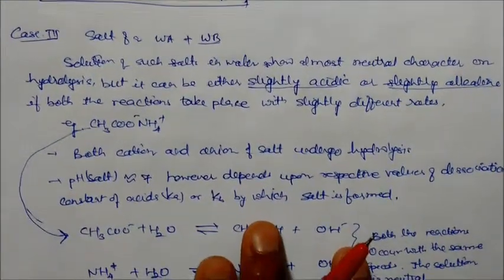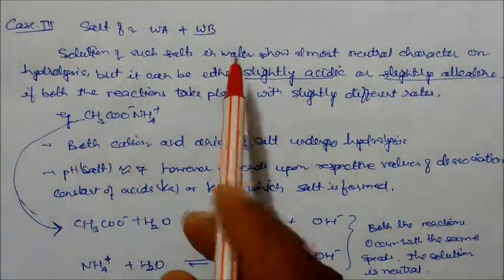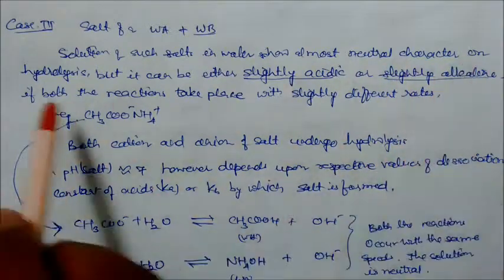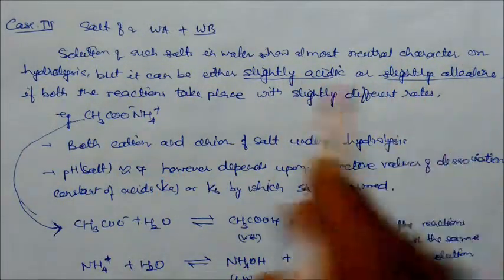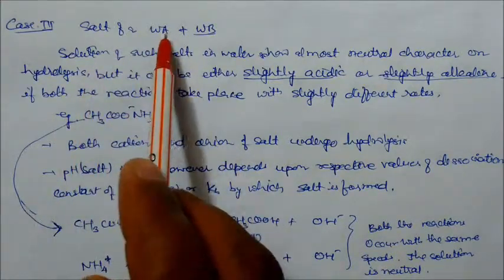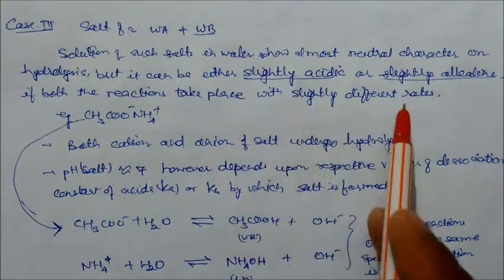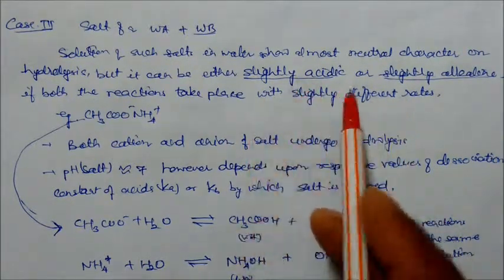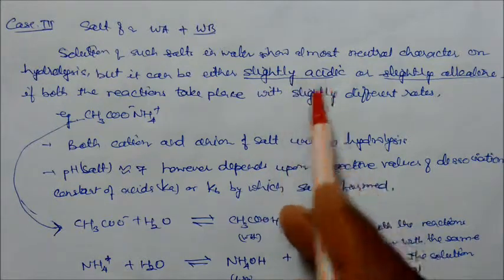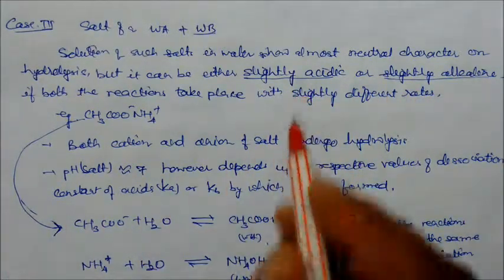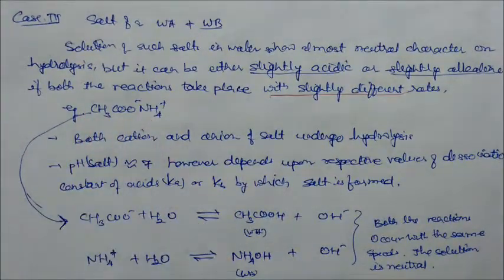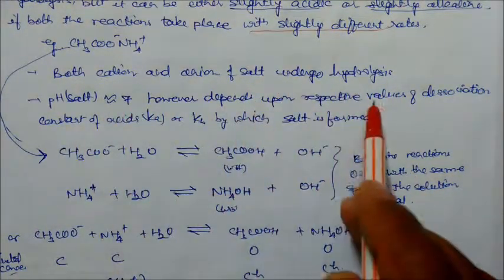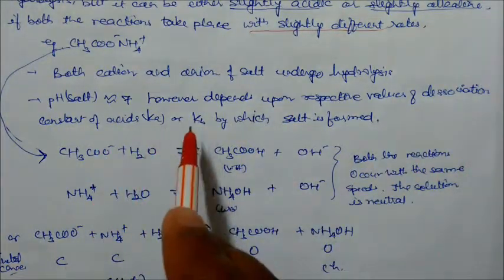Case 3: Salt of weak acid and weak base — the solution of such a salt in water shows almost neutral character on hydrolysis, but it can be either slightly acidic or slightly alkaline. If both the weak acid and weak base react with water at slightly different rates, the solution can be acidic or basic. Taking ammonium acetate as an example: both the cation (NH₄⁺) and anion (CH₃COO⁻) undergo hydrolysis. pH is almost neutral but depends on the respective values of Ka and KB.